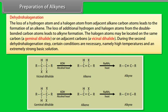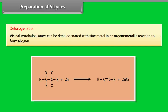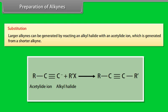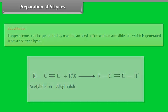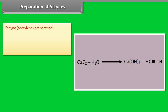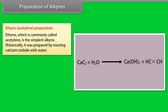During the second dehydrohalogenation step, certain conditions are necessary — namely high temperatures and an extremely strong basic solution. Dehalogenation: vicinal tetrahaloalkanes can be dehalogenated with zinc metal in an organometallic reaction to form alkynes. Substitution: larger alkynes can be generated by reacting an alkyl halide with an acetylide ion, which is generated from a shorter alkyne. Ethyne-acetylene preparation: ethyne, commonly called acetylene, is the simplest alkyne. Historically, it was prepared by reacting calcium carbide with water.